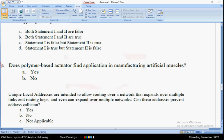Next, the thirteenth question: does polymer-based actuator find application in manufacturing artificial muscles? The meaning of this question is basically will the polymer-based actuators be used in manufacturing artificial muscles? The answer is yes, that is option A.